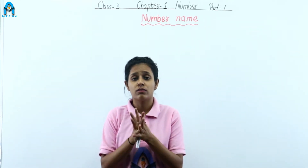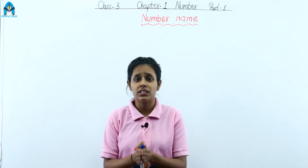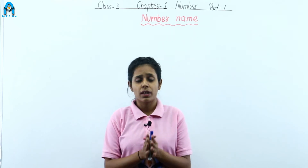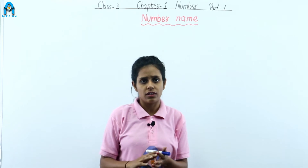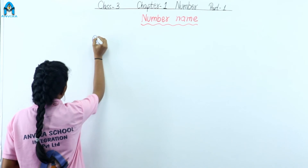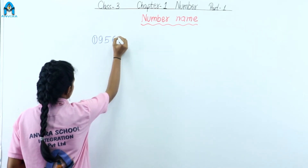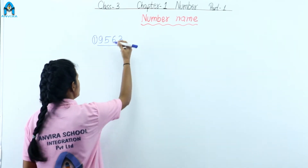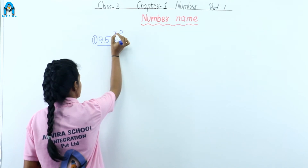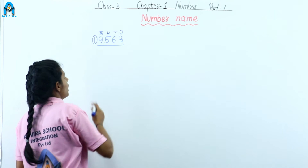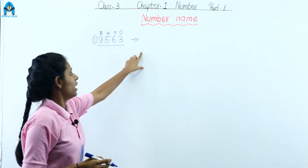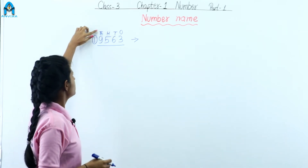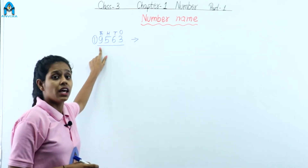So we are learning what is a four-digit number. The smallest four-digit number is 1000 and the largest is 9999. Now let's learn how to read a four-digit number. Our example is 9-5-6-3, a four-digit number. We know the place values: ones, tens, hundreds, and thousands. To write the number name, we start from the thousands place. Nine is placed on thousands, so this is nine thousand.